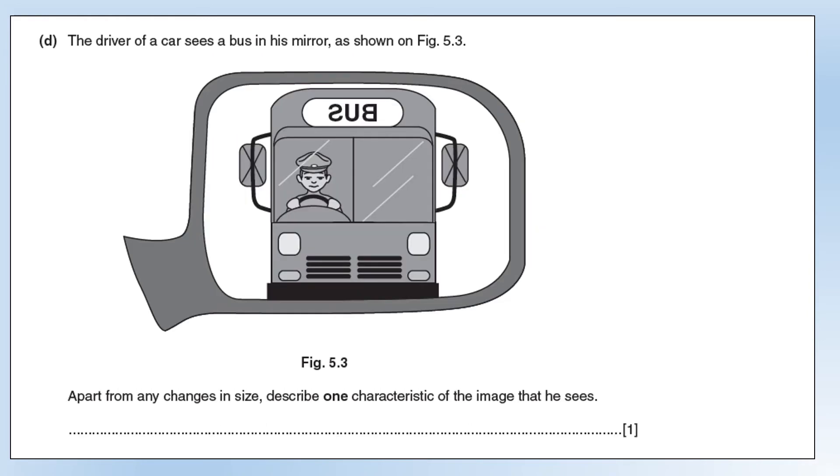The driver in the car sees a bus in his mirror, and so we're looking at the reflected image. Apart from any changes in size, describe one characteristic of the image that he sees. There are a few characteristics we could describe, you only need one of these. First of all, he's seeing a virtual image. It appears to the driver that this bus is inside the mirror, which it isn't. So it's a virtual image. We can see it's upright, so it's not upside down. But it is laterally, which means left, right, inverted. You can see bus has been, the word has been flipped around. So it's left, right, inverted.